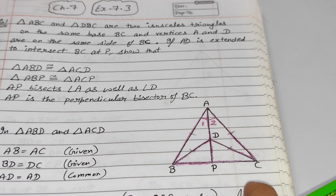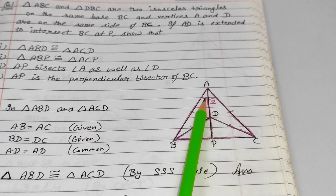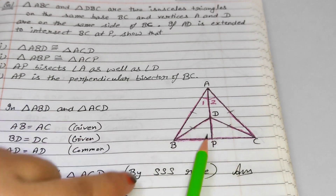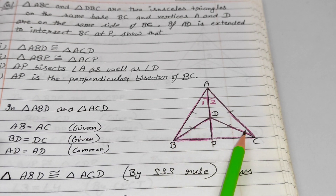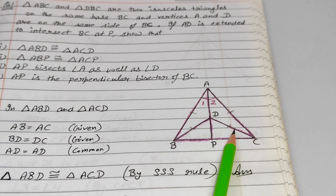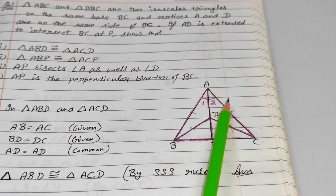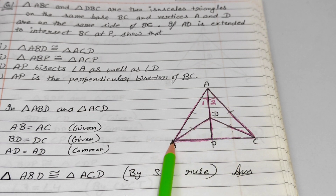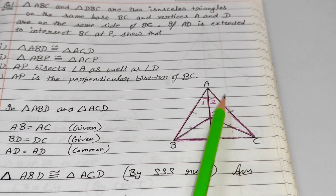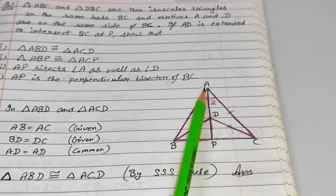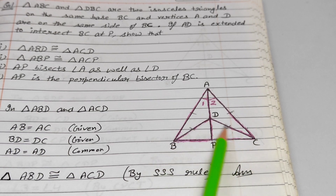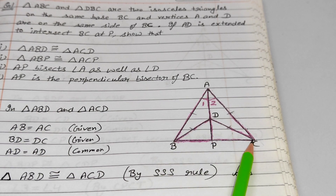Let's understand this question. We have two triangles — one is triangle ABC, which is the whole triangle. The second triangle is DBC. He said these two triangles, ABC and DBC, are isosceles triangles. So in ABC, AB is equal to AC, and in DBC, DB is equal to DC.